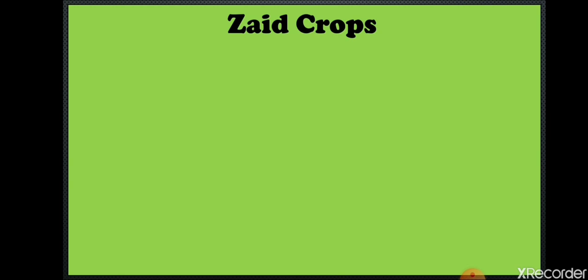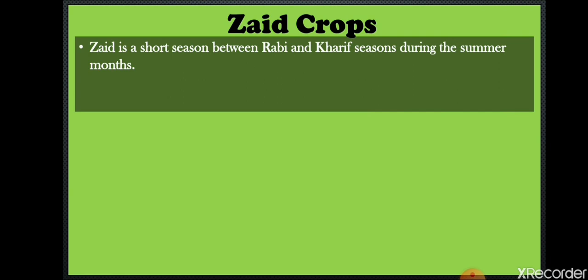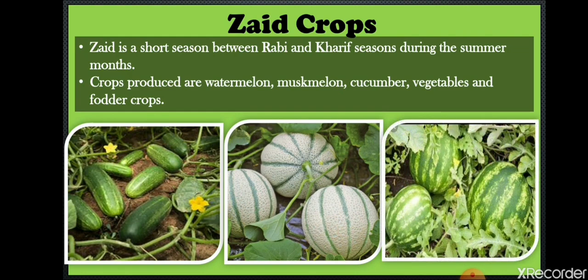Now let's look at Zaid crops. Zaid is a short season that comes between the Rabi and Kharif seasons. The order is: first Rabi, then Zaid, then Kharif. During the summer months, crops produced in Zaid season include watermelon, musk melon, cucumber, vegetables, and fodder crops. Zaid is a very short season, and basically vegetables and fodder crops are grown during this season. This completes our overview of the cropping pattern followed in India.